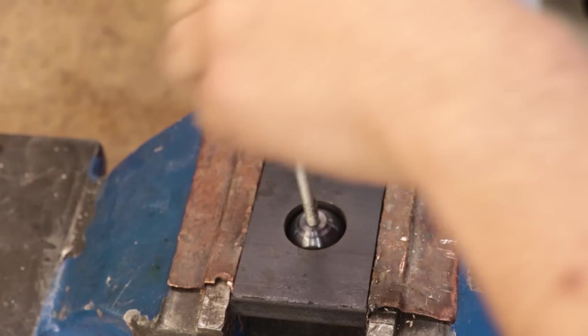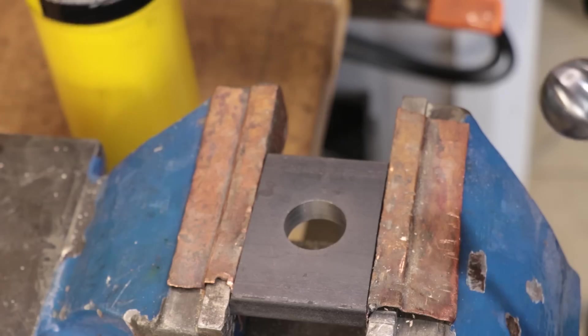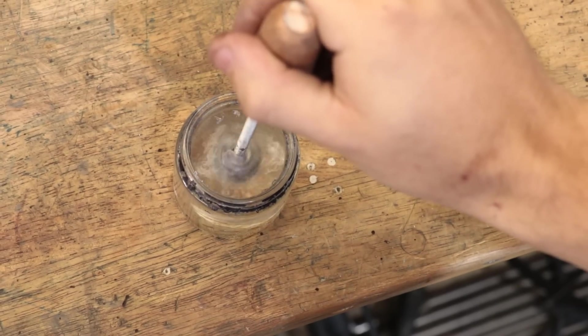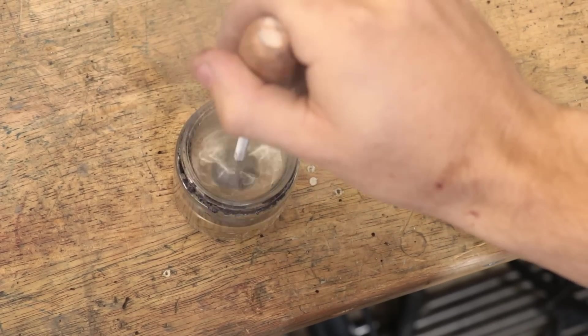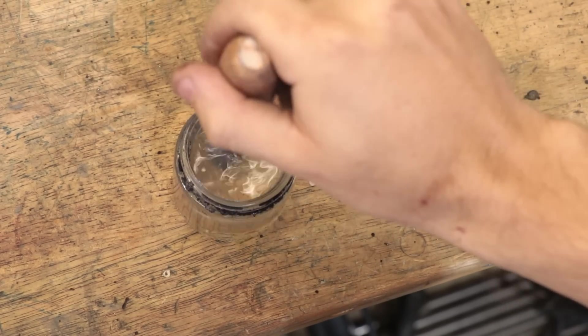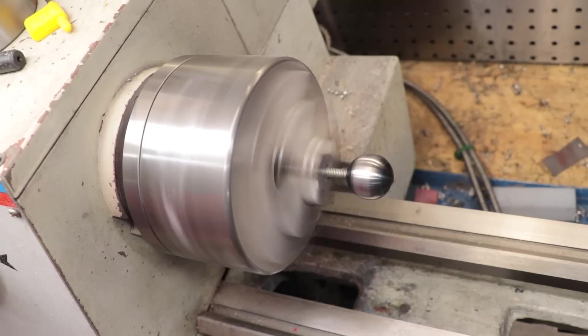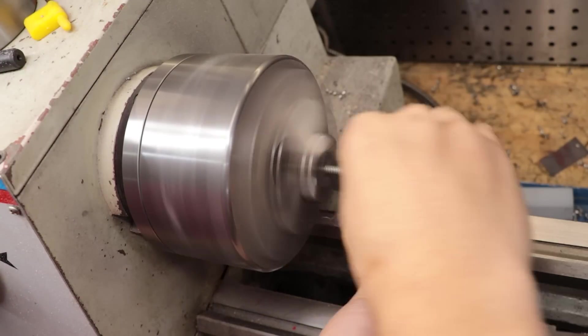As you can see from this first run, the ball has already expanded too much and we're nowhere near 730 degrees. At this point I need to cool it down, take it back to the lathe and sand it down a little bit more and then try again. I only have about 0.1mm to work with so I need to keep the sanding as light as possible.